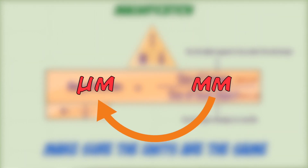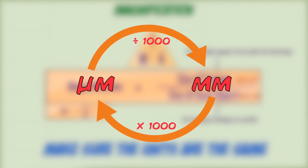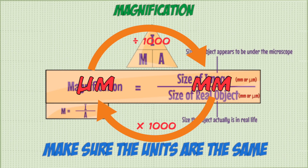If you need to convert from millimeters to micrometers, you multiply by 1,000. To convert the other way, from micrometers to millimeters, you divide by 1,000.